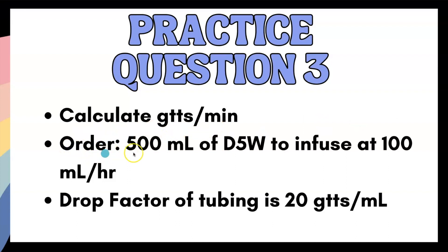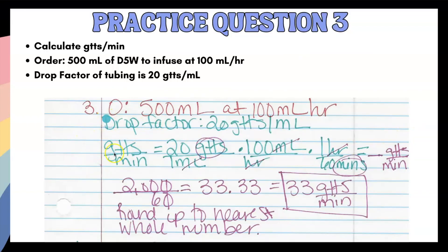Calculate drops per minute. Order is 500 milliliters of D5W to infuse at 100 ml per hour. The drop factor of the tubing is 20 drops per milliliter. So ask yourself, what are we looking for? Drops per minute. What do we have? We have 500 ml and it's infusing at 100 ml per hour and we have a drop factor. We can definitely solve this. What I actually recommend that you do is that you set your problem up first with the unit of measurements.